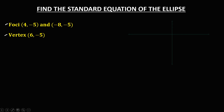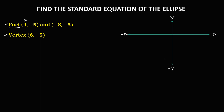So first, we need to graph this ellipse. From the given coordinates of foci, x is positive 4. So in a plane, we have positive x, negative x, positive y, and negative y. For x positive 4, so 1, 2, 3, 4, and y is negative 5.